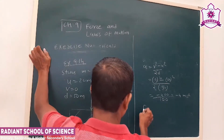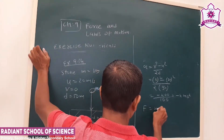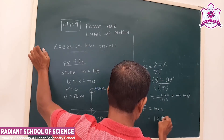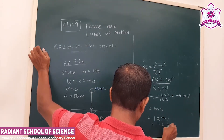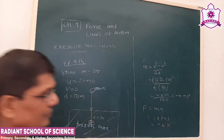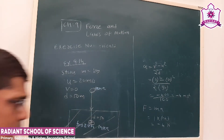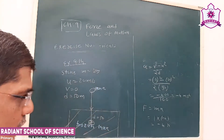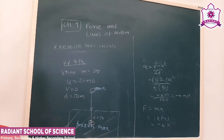Since the velocity decreases, we get a retardation, that is a negative acceleration. The force acting is F equals ma: mass is 1 kg, acceleration is minus 4 meters per second squared. Remember to write the units. This gives us the force and it is a retarding force. This completes exercise number 9.40.